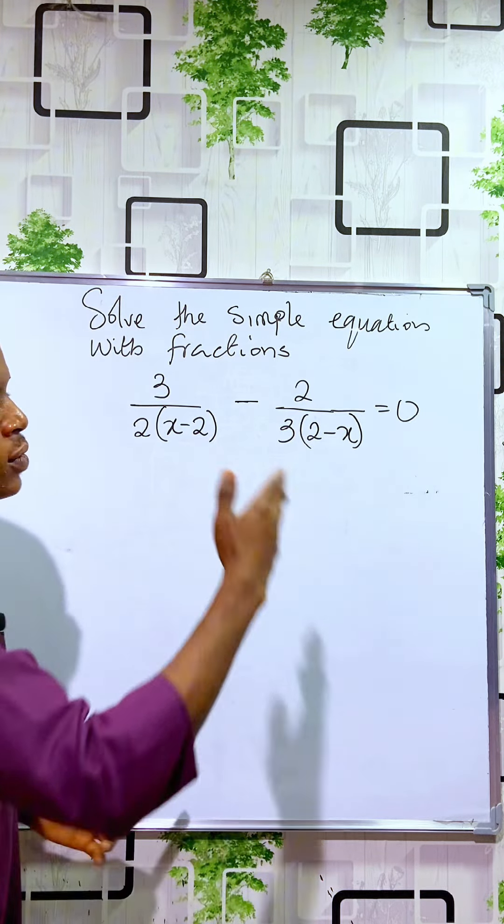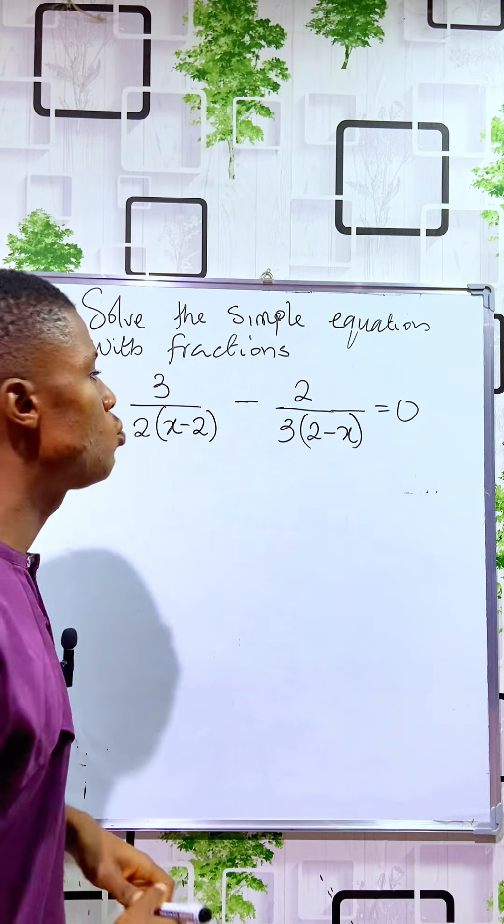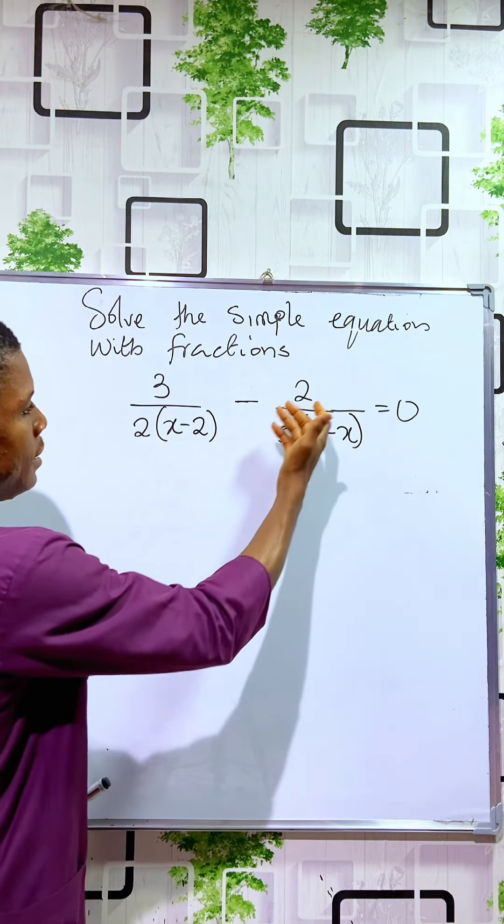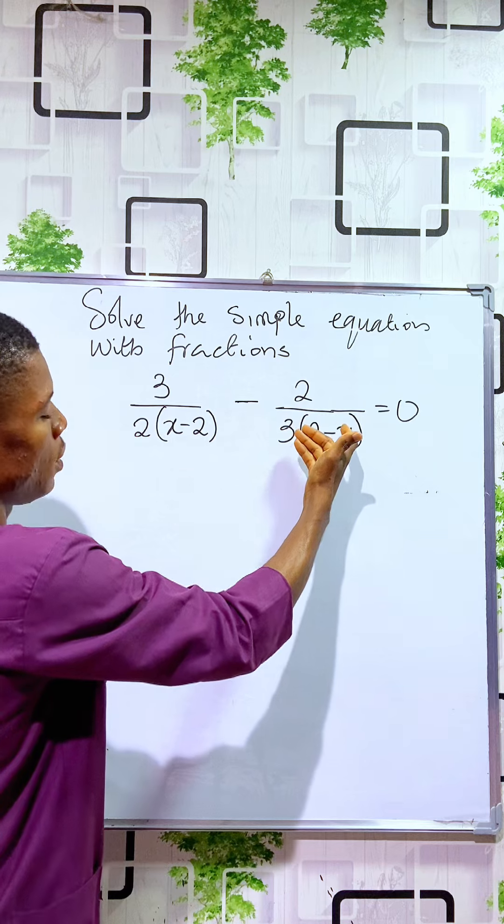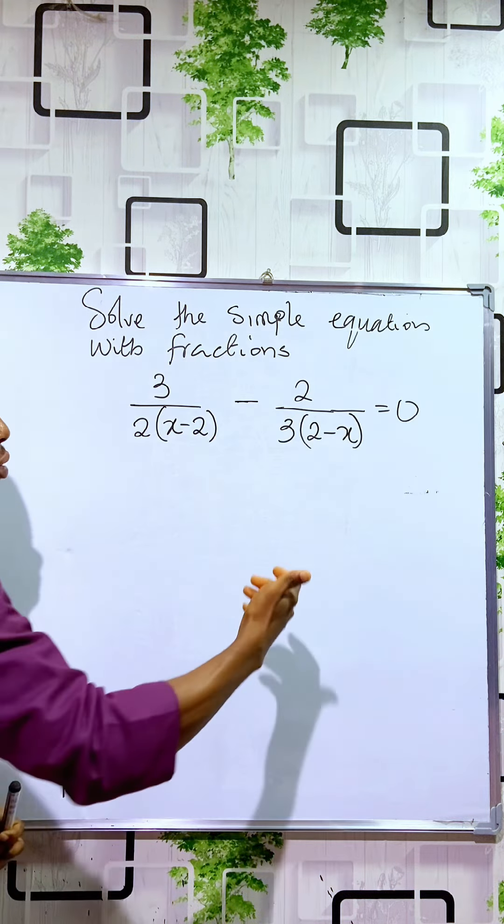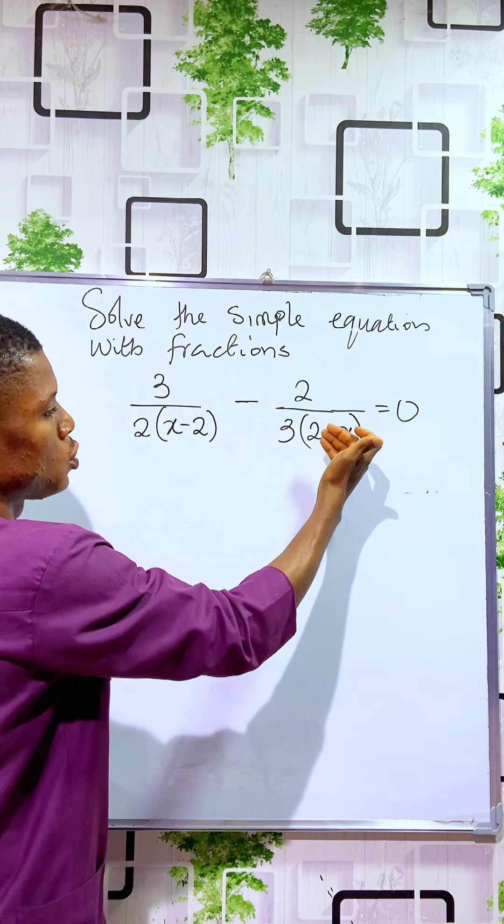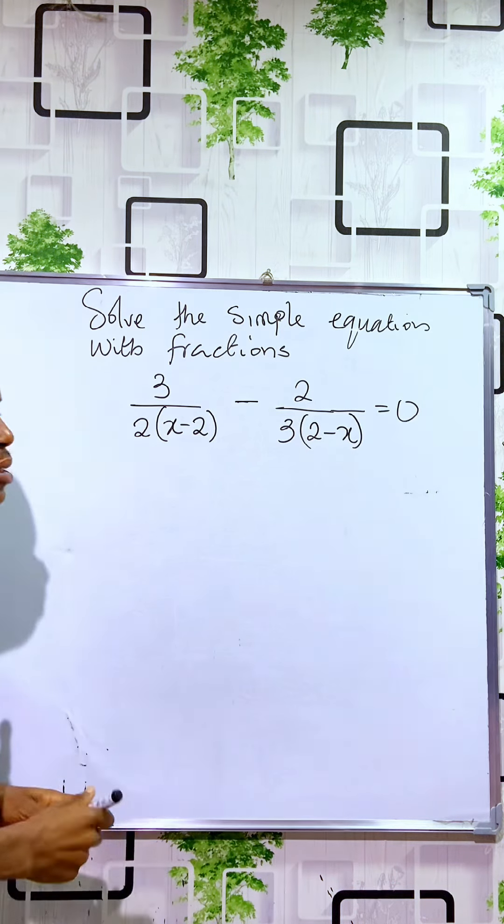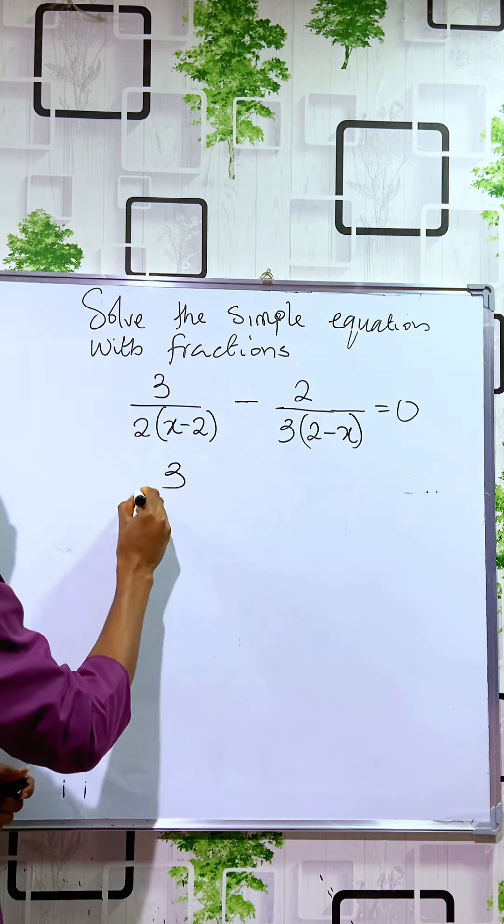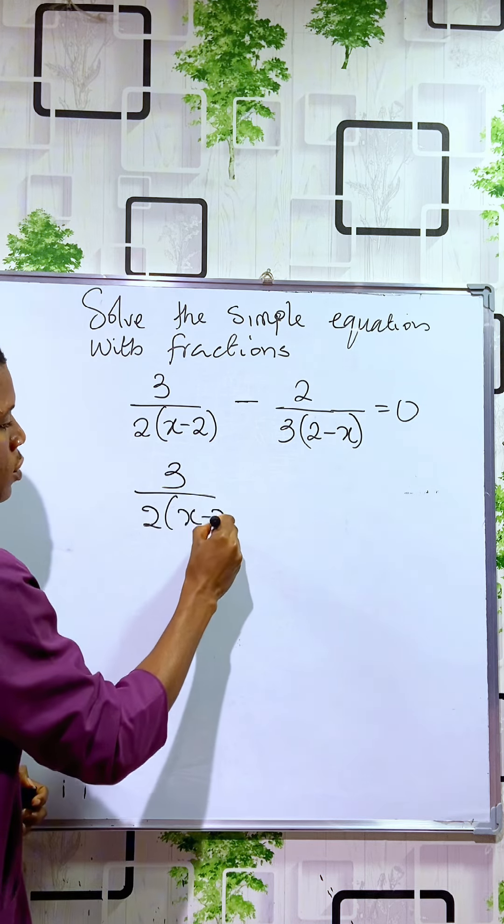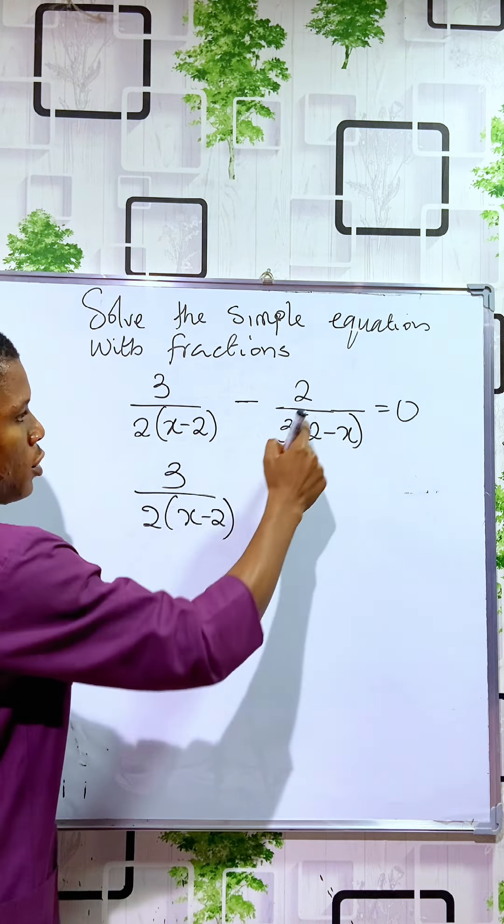So first thing we are going to do is add 2 over 3 into 2 minus x to both sides, so that we have 3 over 2 into x minus 2 is equal to 2 over 3 into 2 minus x.